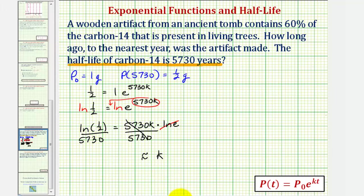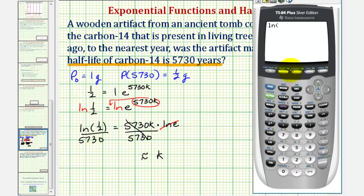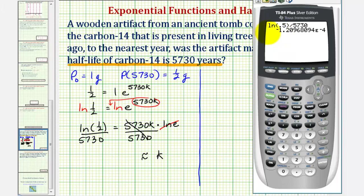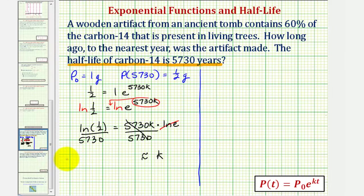Now we'll go to the calculator. We have natural log of 0.5 divided by 5,730. Notice the E negative four in the result, which means this is in scientific notation. Converting to a decimal, we move the decimal point four places to the left, giving us approximately negative 0.000120968.